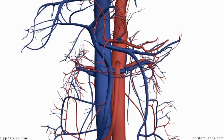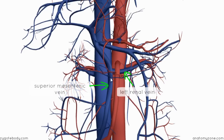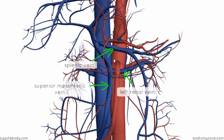Just underneath the SMA, you can see the left renal vein, which runs underneath the superior mesenteric artery. Then you've got the superior mesenteric vein, which runs alongside it, just to the right. Above the superior mesenteric artery is the splenic vein. The splenic vein is shown slightly out of place — it should be shown a little bit further down because it crosses anteriorly in front of the superior mesenteric artery, just about here.